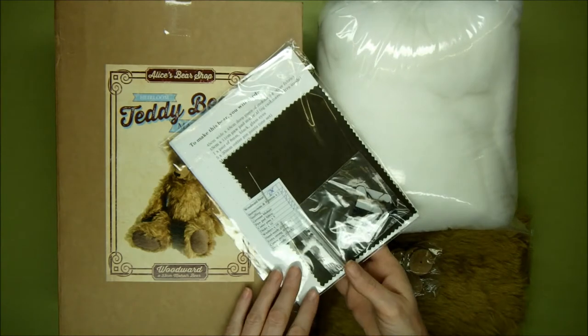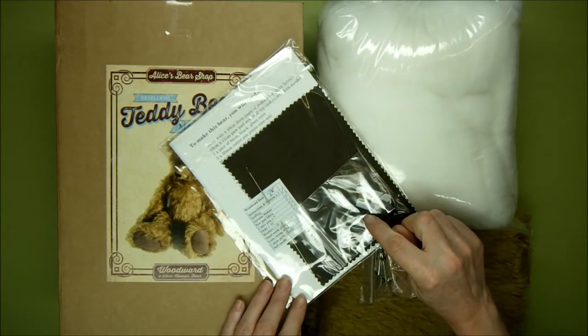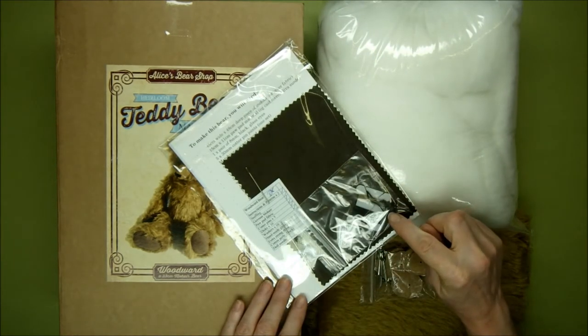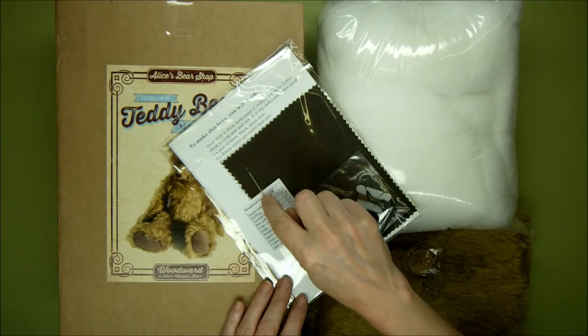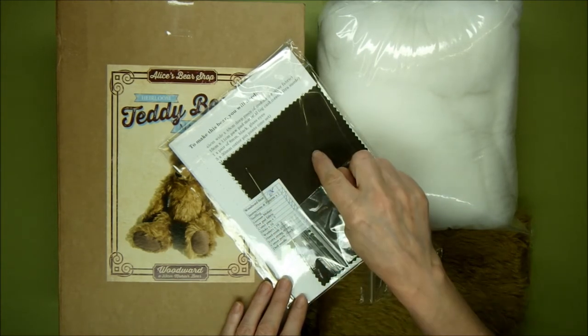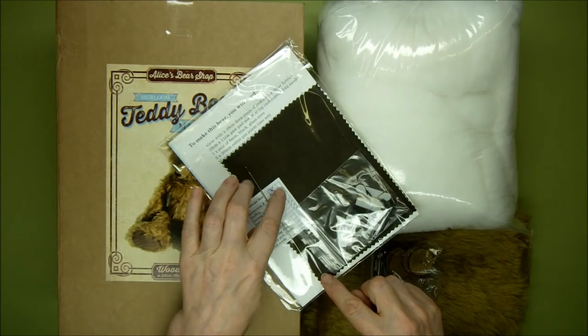Your pattern and instructions, and in the back of this pack you'll have your nose thread, extra strong thread for the eyes, a pair of handmade glass eyes, your long doll needle for inserting the eyes, paw pad fabric, and there's a checklist here.